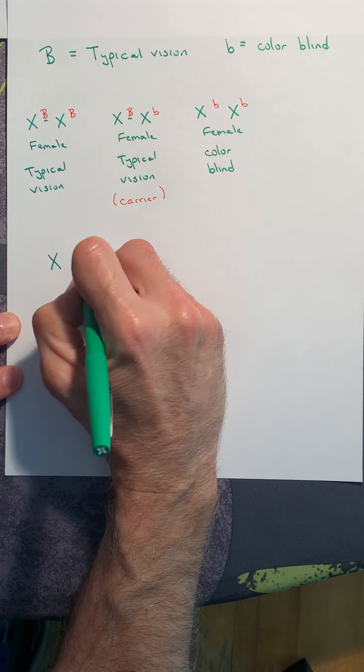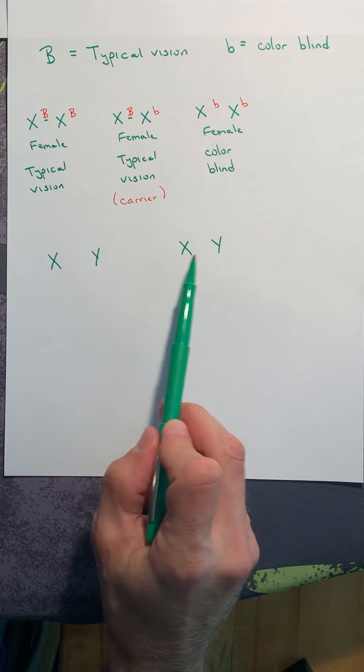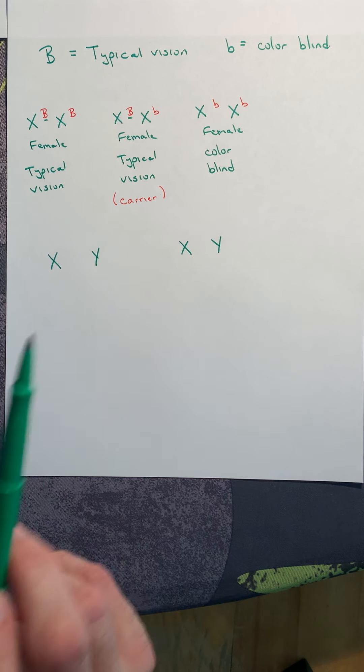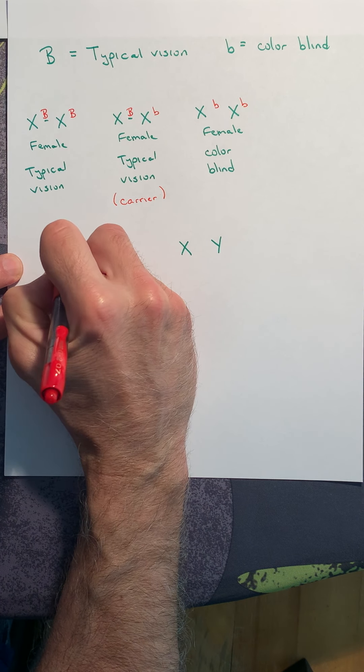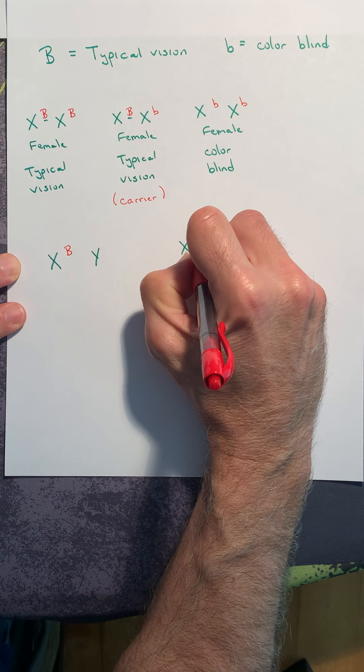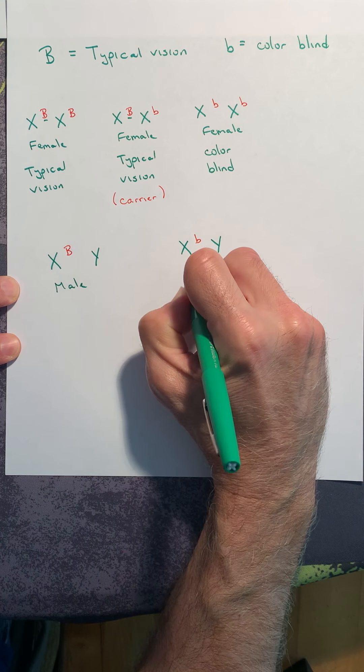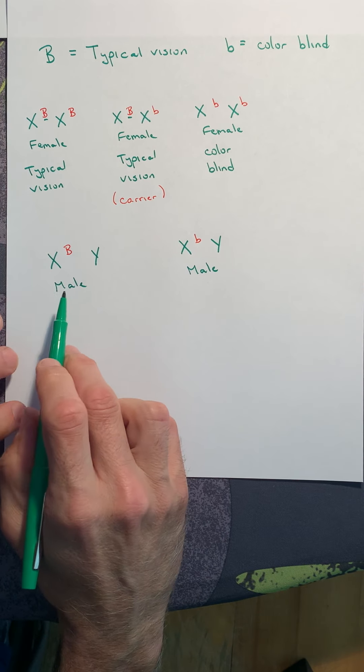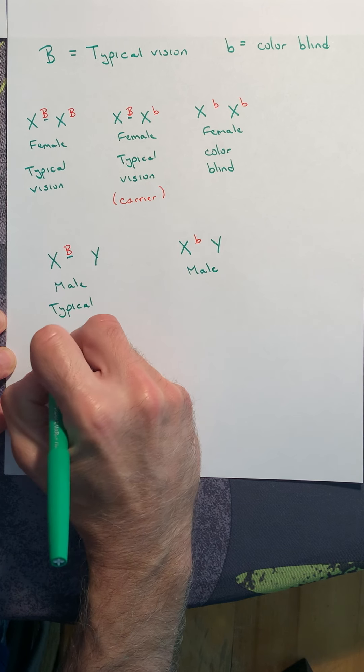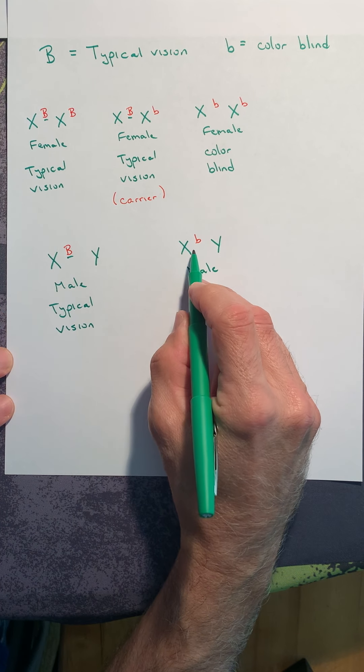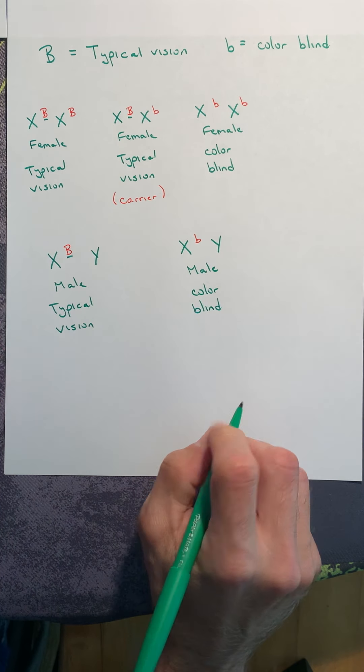All right, let's take a look at the male. The male is either X, Y or he's X, Y. Get a load of this. As a male, you only have two choices. Why do you only have two choices? Because as a male, he only has one X. So the male either gets the dominant allele on his X, or he gets the recessive allele on his X. It's one or the other. So both of these individuals are male. This individual, because he carries and expresses the dominant B, he has typical vision. But this male, since he carries and expresses the recessive allele, he's colorblind.